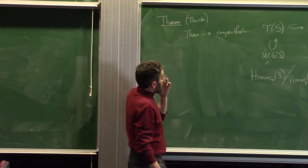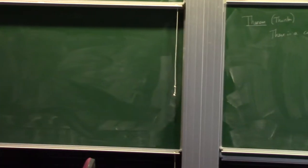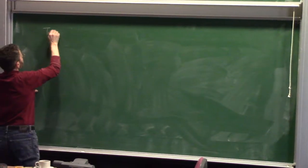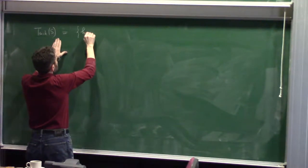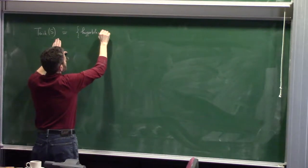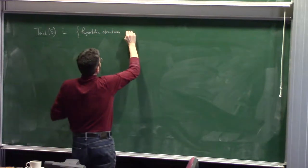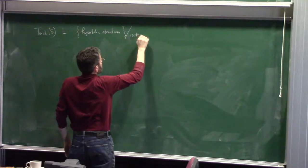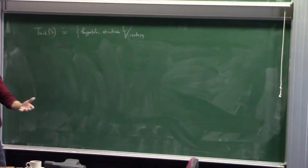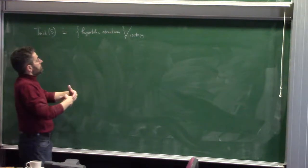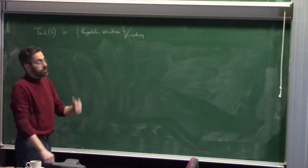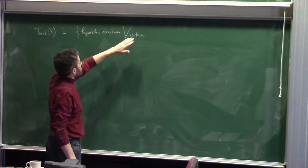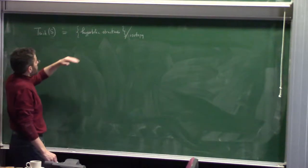I owe you a few more comments and definitions for this picture. Let's see what the Teichmüller space is officially. The Teichmüller space can be described in various ways. One is: it's just hyperbolic structures up to isotopy. A hyperbolic structure is an atlas of charts to hyperbolic space. If you apply an isotopy of the surface, you move all the charts around and get new charts, but since it was just an isotopy, you want to think of it as the same object.